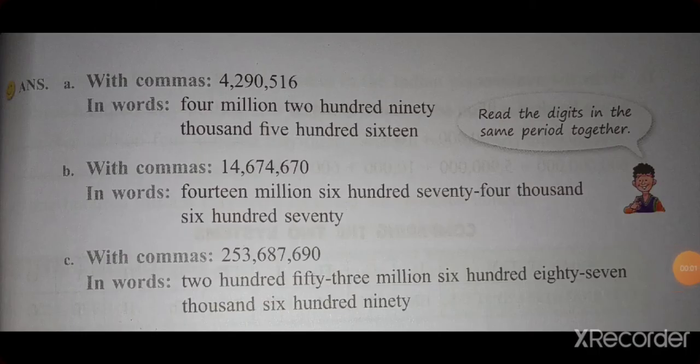Now we will see how to write the numbers using commas and how to write their names. In the international system, you should keep a comma after every 3 digits. Starting from the right, the first 3 digits are 5, 1, 6 — after the hundreds place, keep a comma. Next, the following 3 digits are 2, 9, 0 — after that, keep another comma. Like this, you write commas in the international system.